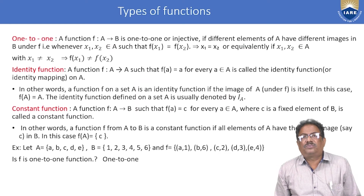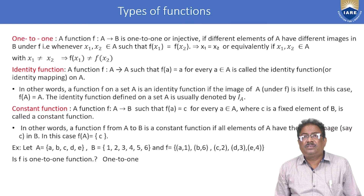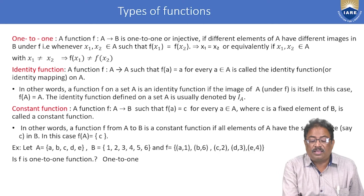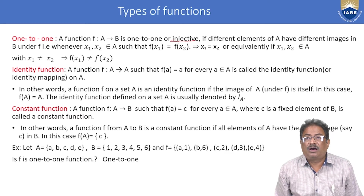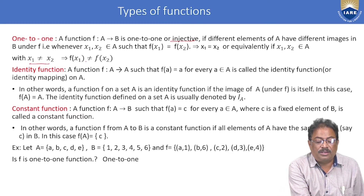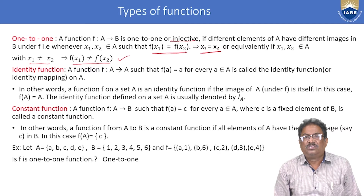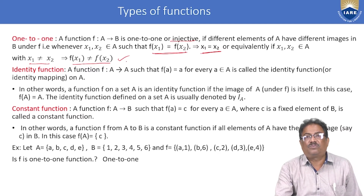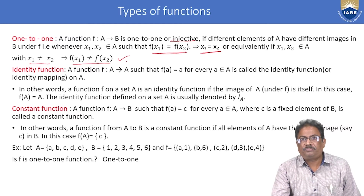Now let's discuss types of functions. The first type is a one-to-one (injective) function. A function f is said to be one-to-one if different elements of A have different images in B. Equivalently, if two elements have the same image, then those elements must be the same. Such a function is called a one-one or one-to-one function.